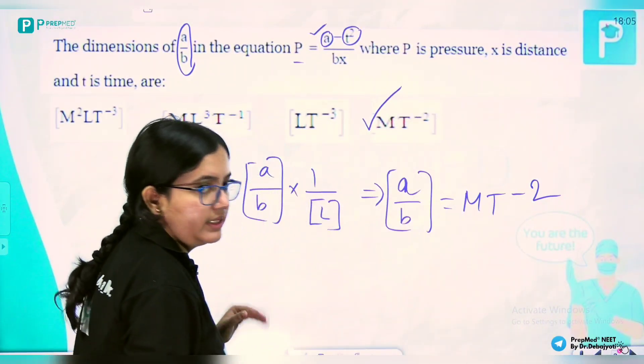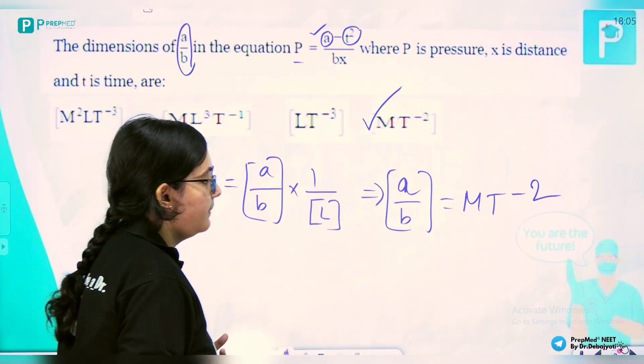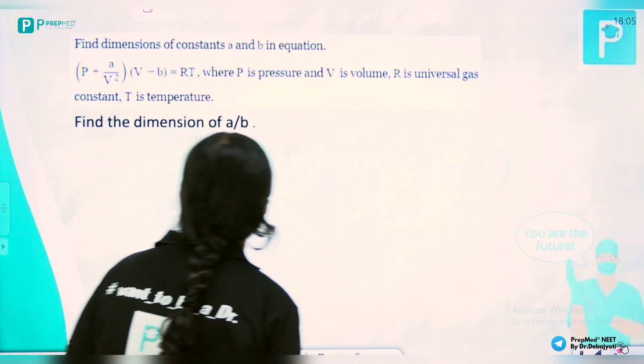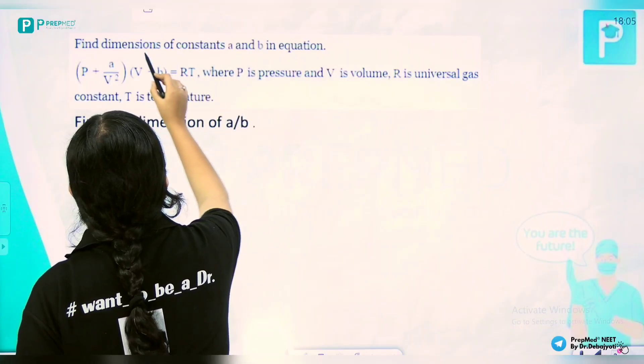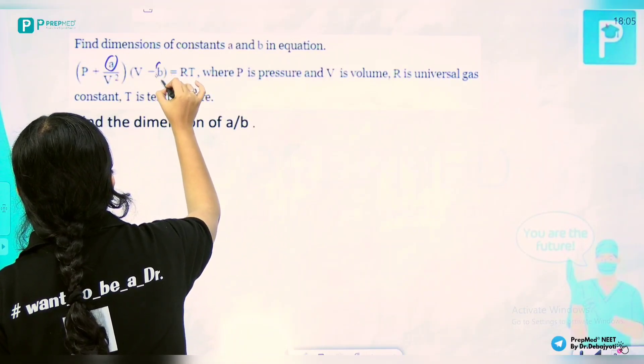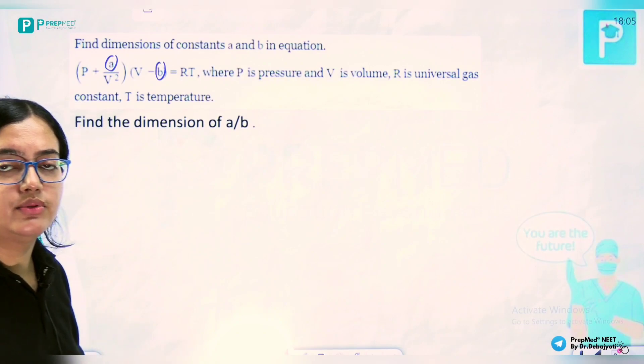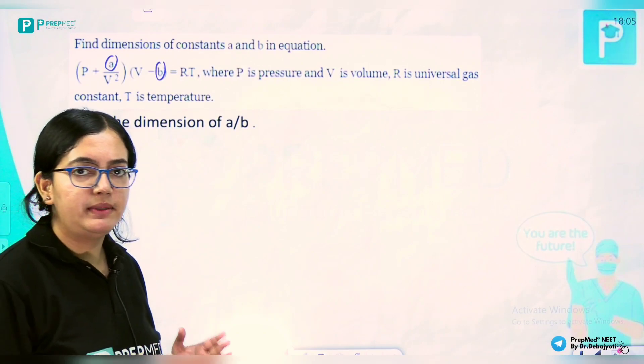We need to calculate a/b again. We write a/b where dimension of a is equivalent to Pv²